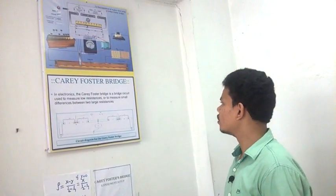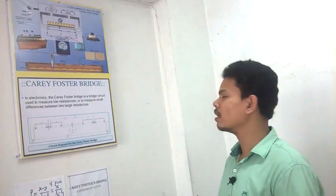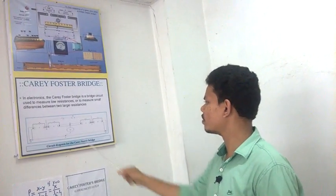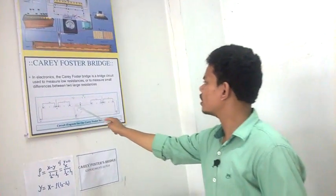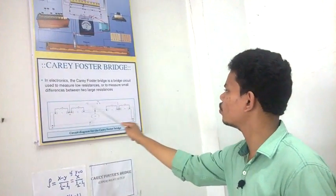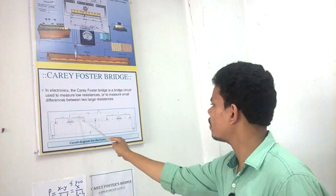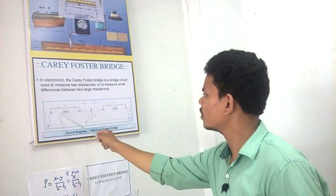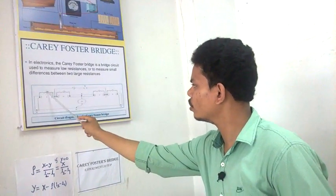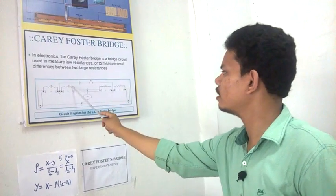Our aim is to find out the unknown resistance using this meter bridge system and the whole system is called Carey Foster Bridge. We know that there is a meter bridge and there are two left gaps and two right gaps. This extreme left gap we are using a known resistance, another is unknown resistance.